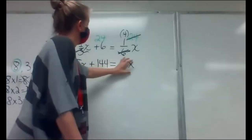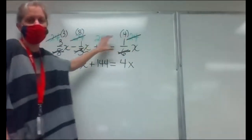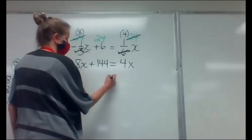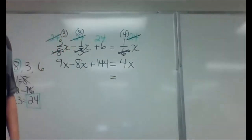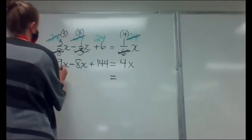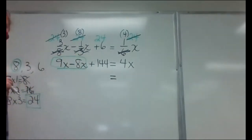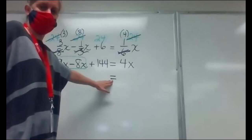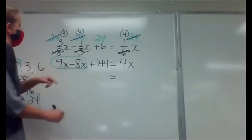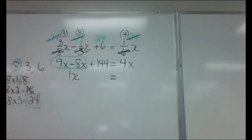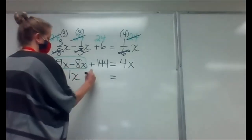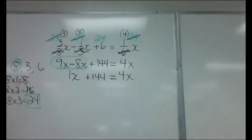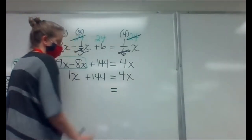Bring down my equal. Look at that left side — there are terms I can put in the same basket. Both are X's on the same side of the equal sign, so I'll combine them: 9X minus 8X leaves me with 1X. Drop down the plus 144. Equals 4X.